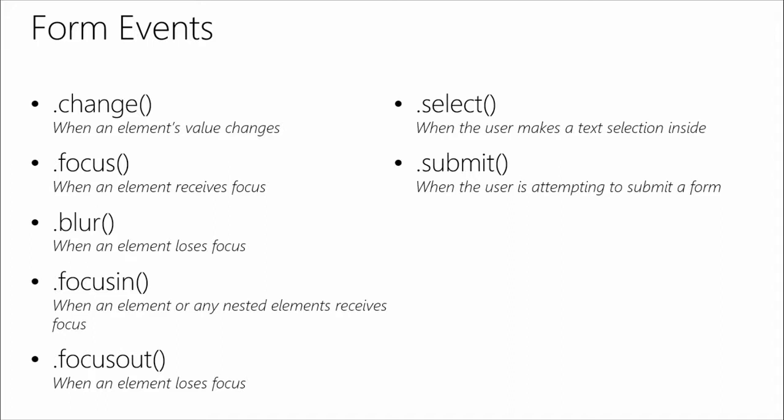Let's look directly at our form events. There are quite a few because these involve user interaction. We've got change events when an element's value changes, focus when an element receives focus, and blur if it loses its focus. Focus and blur are not always advisable from an accessibility standpoint — a lot of screen readers and assistive technology can't work correctly when you're just watching focus and unfocus, cutting out users who simply can't use your page because of bad usability.